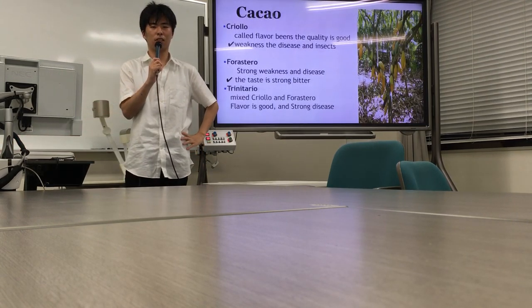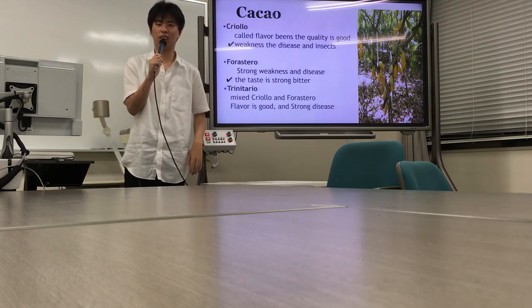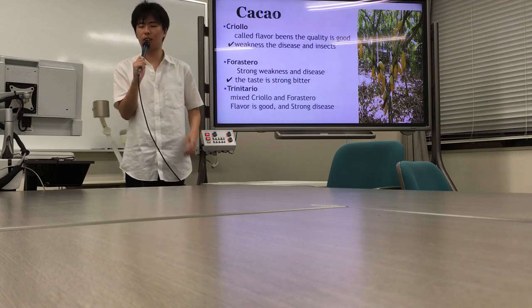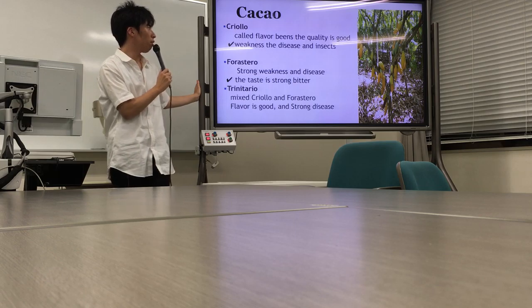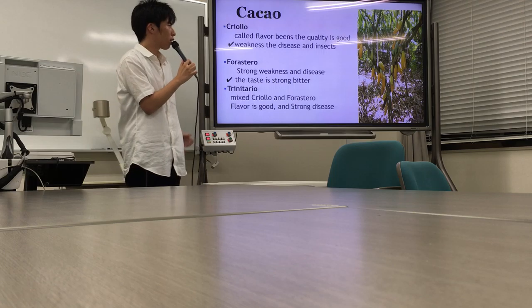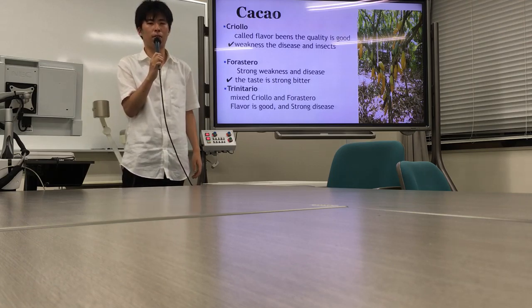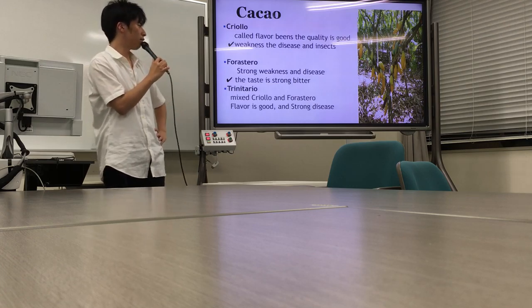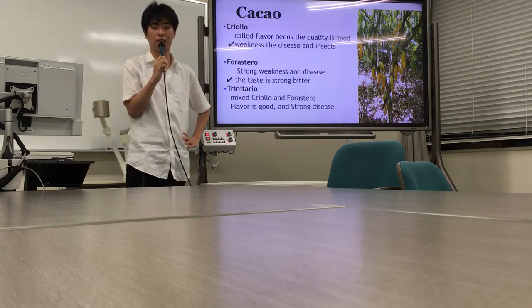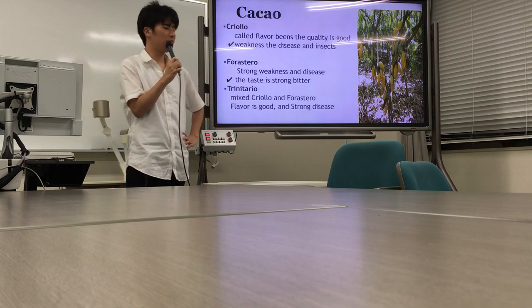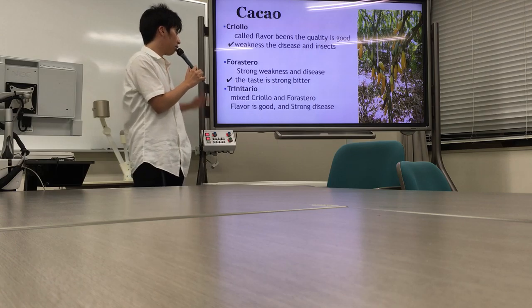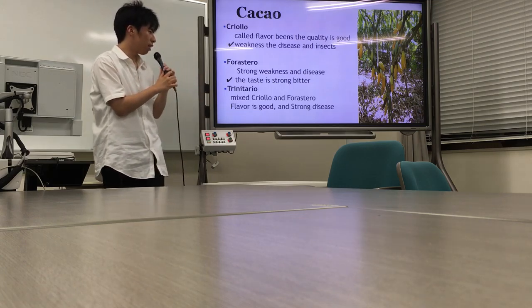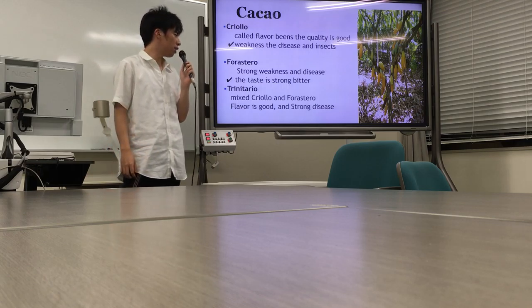The resource of chocolate is cacao. Do you know cacao has three species? The first is the Criollo species, called the flavor beans. The flavor is very good, but the negative point is its weakness against disease and insects. The next is the Forastero species, which is strong against disease — that is a positive point — but the negative point is the taste is strongly bitter. The last one is the Trinitario species, which is a mix of Criollo and Forastero. It has good flavor and strong disease resistance.